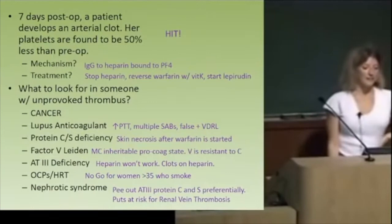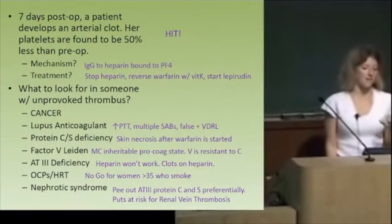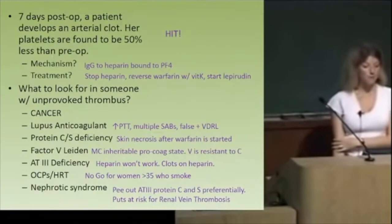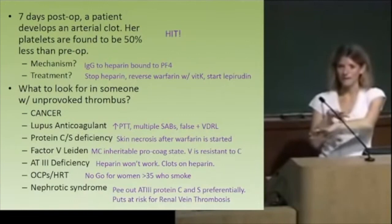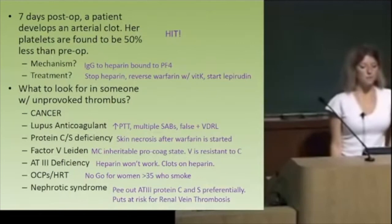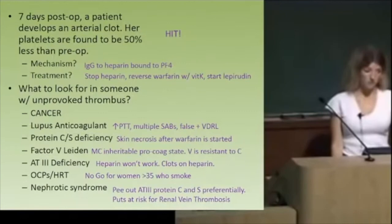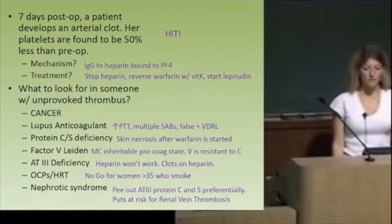In someone with an unprovoked thrombus, always think about cancer, especially if they're older. Lupus anticoagulant causes high PTT and may present with a history of multiple spontaneous abortions and a false positive syphilis test. Protein C and S deficiency causes nasty skin necrosis after starting warfarin. Factor V Leiden is the most common cause of a hypercoagulable state. AT3 deficiency is important because heparin won't work in those patients. Estrogen increases clotting risk — don't give it to older women who smoke. Nephrotic syndrome causes patients to urinate out clotting factors, putting them at risk for renal vein thrombosis.